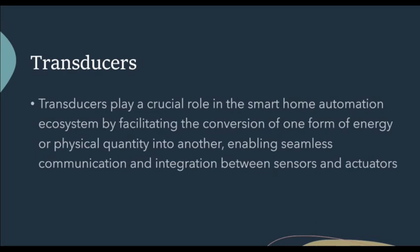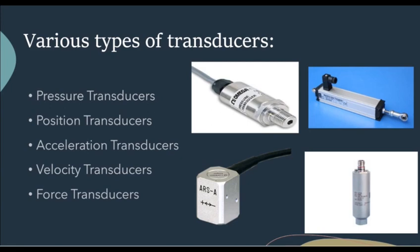The other important component in smart home automation is transducers. Transducers play a crucial role by facilitating the conversion of one form of energy or physical quantity into another, enabling seamless communication and integration between sensors and actuators. Types used in home automation include pressure transducers, which monitor and regulate water pressure in plumbing systems and detect changes in air pressure for HVAC systems, ensuring efficient and safe operation of household utilities. Position transducers are used to monitor and control the position of various devices such as motorized curtains, smart door locks or automated gate systems, enabling precise and automated adjustments based on user preferences or environmental conditions.